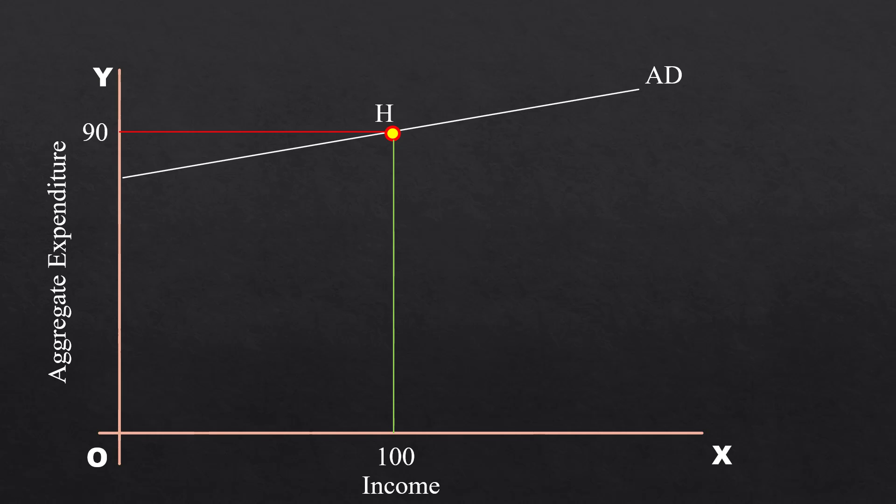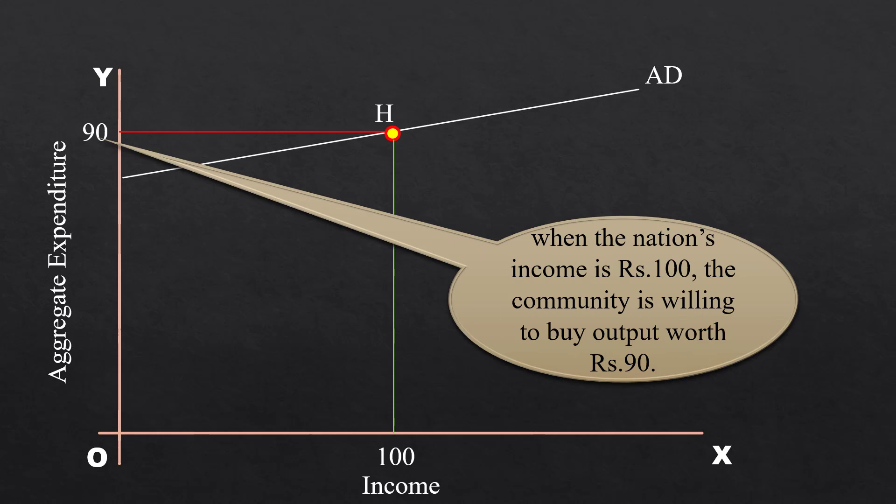In this curve, there is no reference to output. This aggregate expenditure actually represents the money value of output that is likely to be bought when the income is 100 rupees. So, the best way of understanding the point H is, that when the nation's income is 100 rupees, the community is willing to buy output worth 90 rupees.